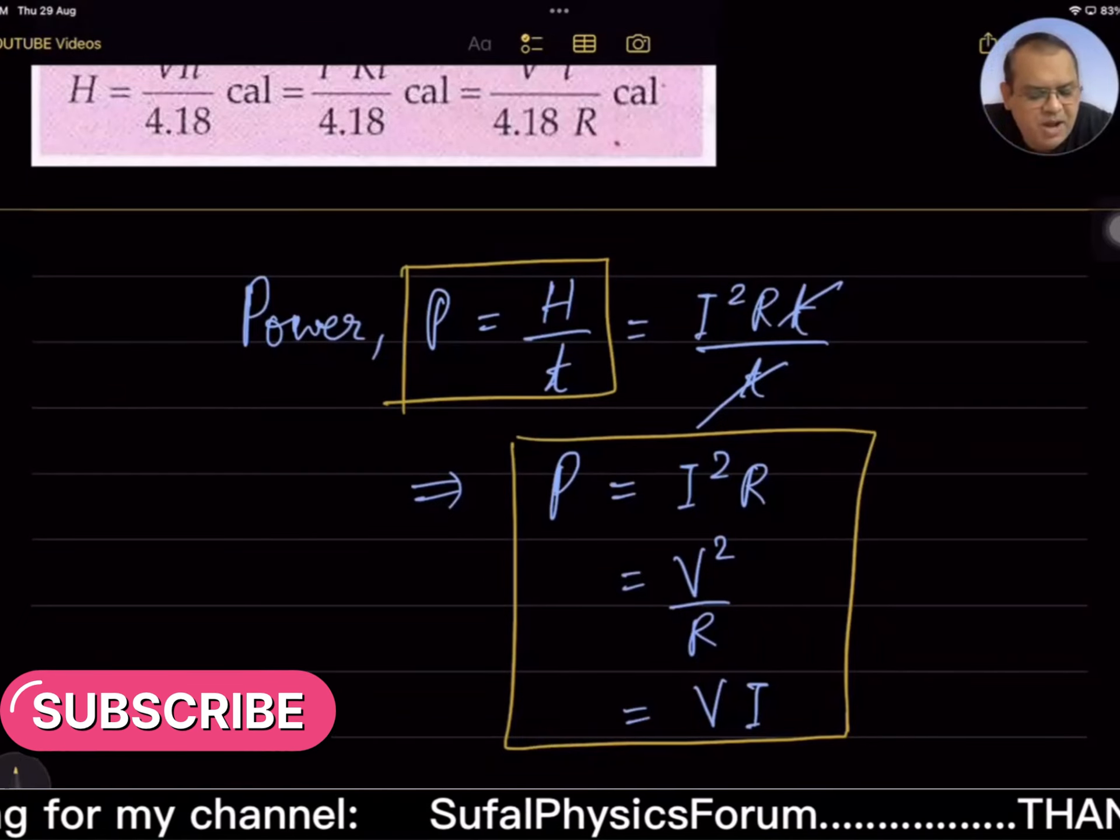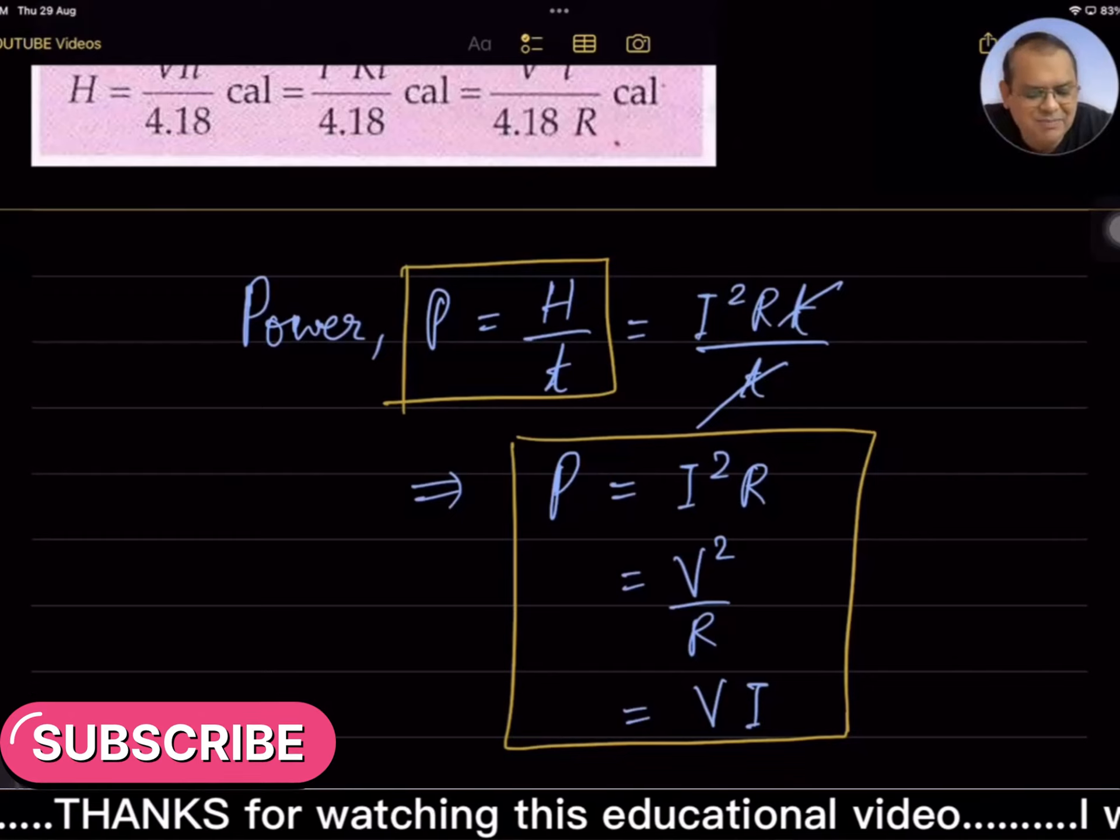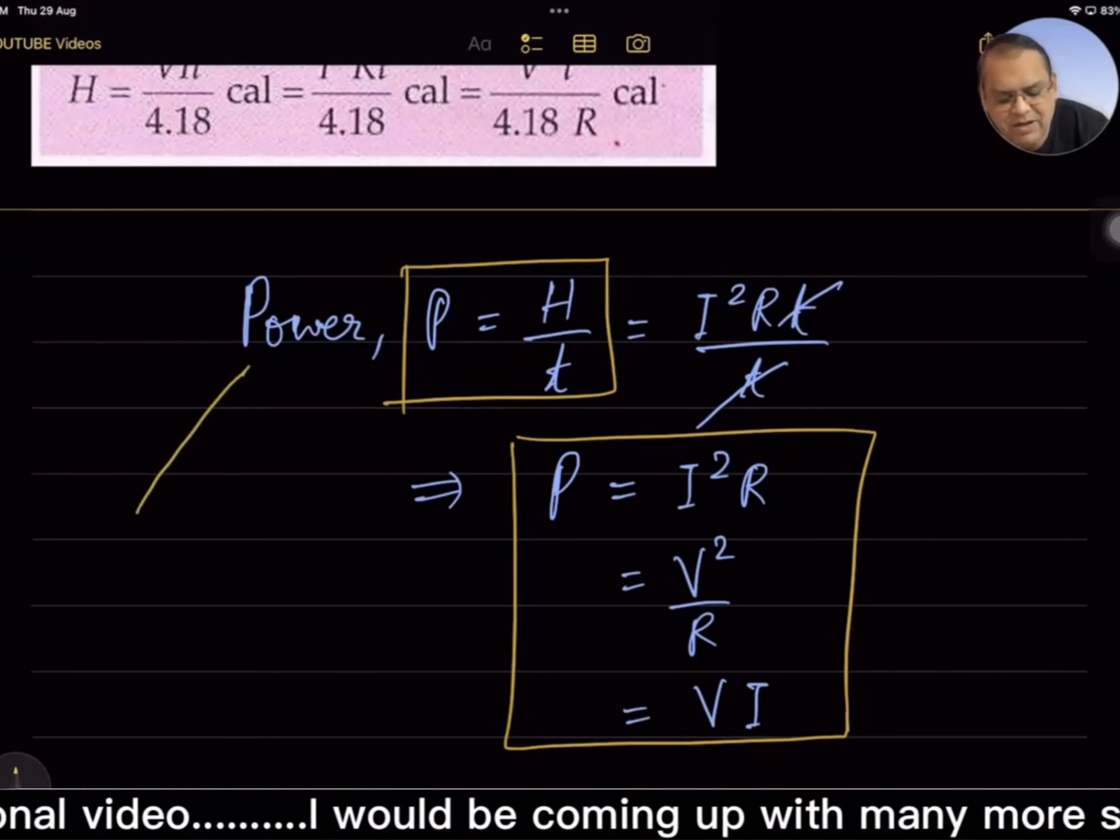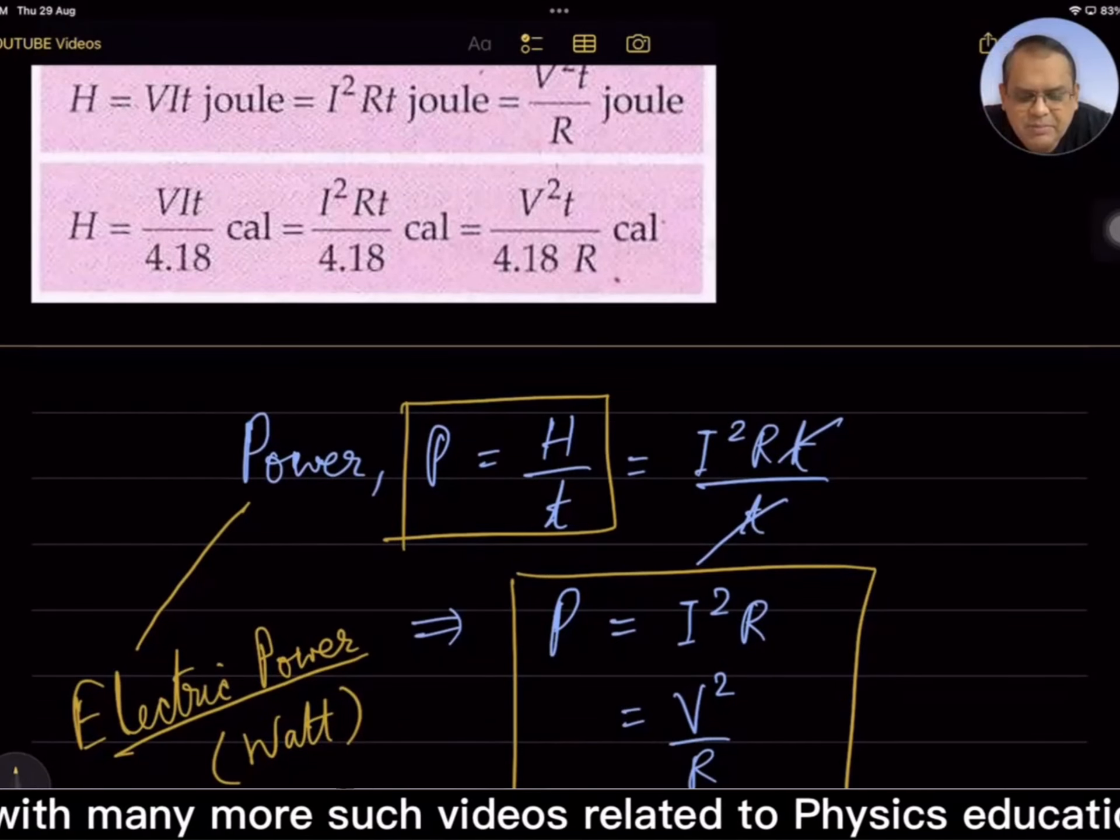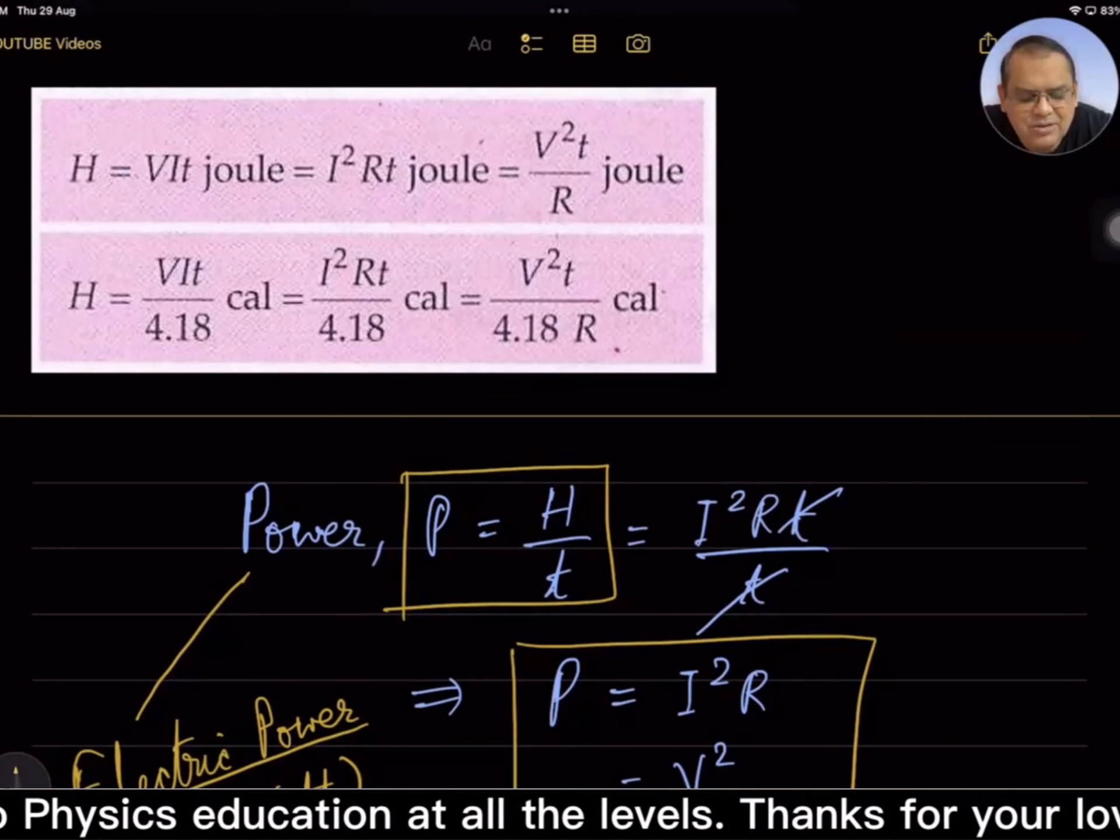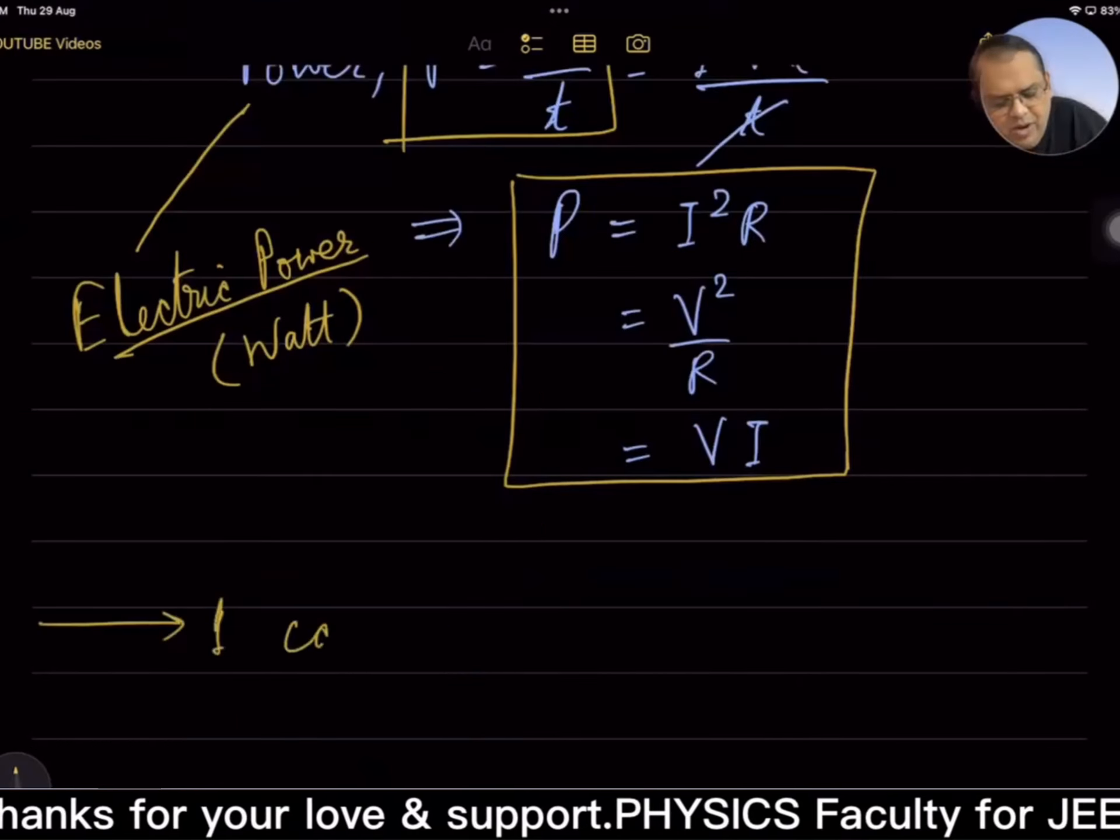At the same time, we need to remember that power is rate of doing work or rate of heat dissipation. We are referring to this power as electric power. From the pink box we can see it mentions calorie also. Obviously joule can be converted: one calorie is equal to 4.18 joules.